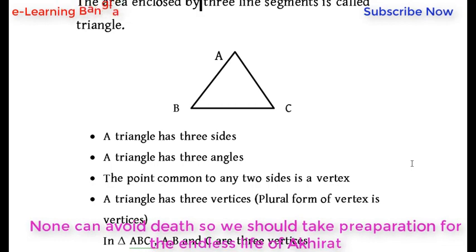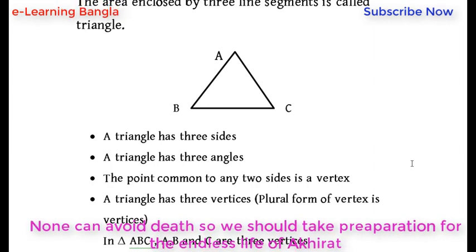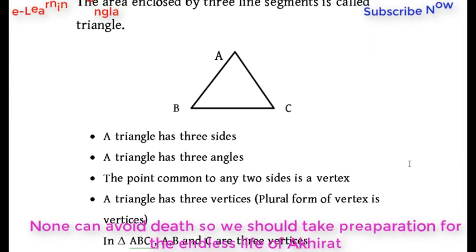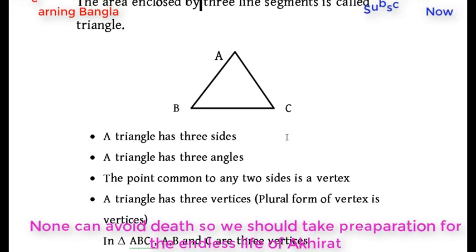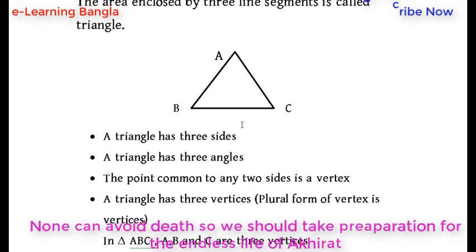The point common to any two sides is called a vertex. The vertices are labeled as points A, B, and C.